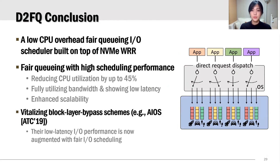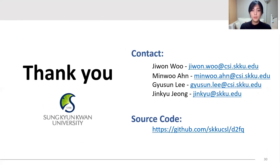Let me conclude this talk. We present D2FQ, a low overhead, high performance fair queuing IO scheduler. D2FQ is carefully designed to implement a sophisticated fair queuing IO scheduler on top of simple device-side IO scheduling features, thereby saving CPU cycles and improving IO performance. D2FQ can also vitalize block-layer-bypassing schemes so they can have fair queuing IO scheduling capability. Thank you for watching this presentation, and if you have any questions, feel free to contact us.